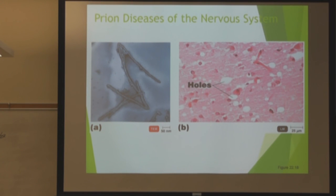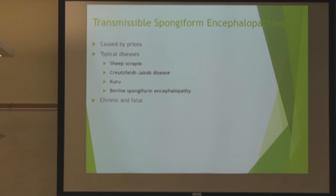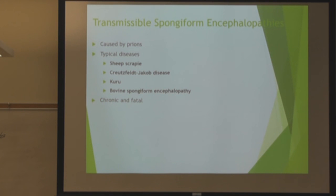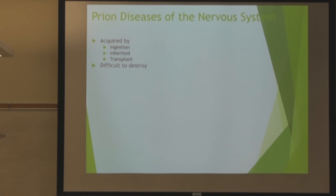Prion diseases of the nervous system are the more interesting ones. You have spongiform encephalopathy, with several classic diseases listed. The problem with prions is they're very, very hard to kill — basically nothing kills them. They are chronic and fatal. They're acquired through ingestion of contaminated meat, like mad cow disease, or inherited, or from transplant. They are extremely difficult to destroy.